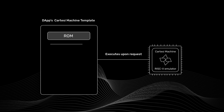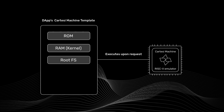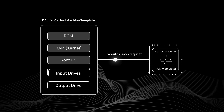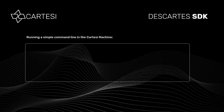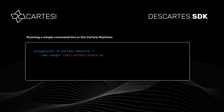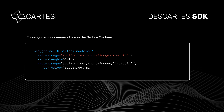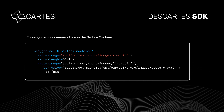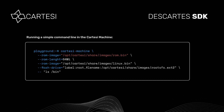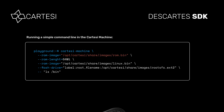The template includes ROM and RAM images; the RAM contains the Linux kernel itself, a root FS flash drive containing all the data files and programs that make up an embedded Linux distribution, and additional empty flash drives that will hold the computation input and output. In this example, you see a command from the CLI interface that builds a Cartesi machine. You can see how it specifies the ROM image file, the RAM image file containing the Linux kernel, 64 megabytes of RAM, and a flash drive image for the root FS. Once initialization is complete, the machine executes the command ls-bin and exits.